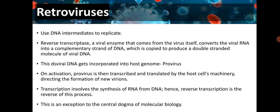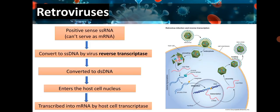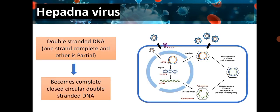Transcription involves synthesis of RNA from DNA; reverse transcription is the reverse of this process, an exception to the central dogma of molecular biology. The positive-sense single-stranded RNA gets converted to single-stranded DNA by viral reverse transcriptase, then to double-stranded DNA, which enters the host cell nucleus and is transcribed into messenger RNA by host cell transcriptase. The second type is Hepadnavirus, which has a double-stranded DNA genome where one strand is complete and the other is partial; it becomes a complete closed-circular DNA before replication.